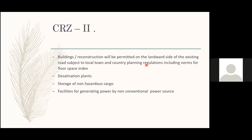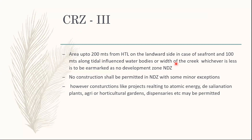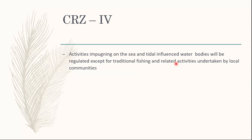CRZ-3 covers areas which are neither CRZ-1 nor CRZ-2. The area from 200 meters from the high tide line on the landward side for seafront, and 100 meters along tidal influence waters — whichever is less — is to be earmarked as a No Development Zone (NDZ), where no construction whatsoever is permitted. However, certain government-related activities like atomic energy are permitted in CRZ-3. CRZ-4 allows most activities but with high regulation, and the concerned authority's permission must be taken.